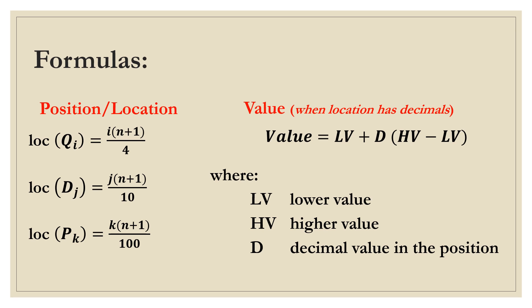So, those are the formulas for the positions. Now, for you to obtain the value when the location has a decimal, then the value is equal to the lower value plus the decimal value in the position, times the quantity higher value minus the lower value. Let's use these formulas in an example.